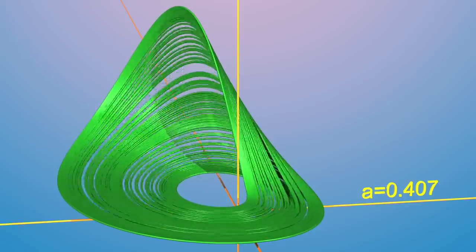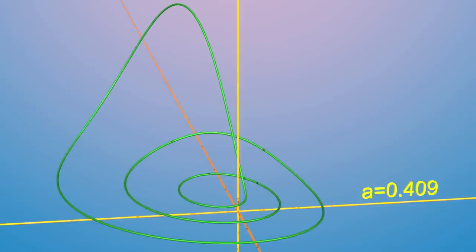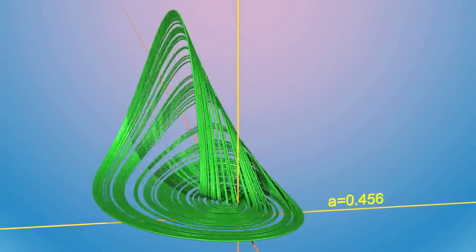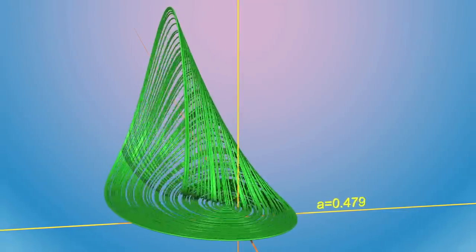But the surprise is, if we continue to increase the parameter A, sometimes without warning, the chaotic dynamics simplify, returning to just a single periodic orbit.